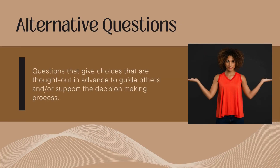Another type of question is an alternative question. These are questions that give choices that are thought out in advance. An example would be asking a colleague, "Would you prefer to review this document together at 2 o'clock on Tuesday or at 8:30 on Wednesday?" This type of question can be helpful when the conversation would benefit from guidance or if people were having a hard time making a decision.